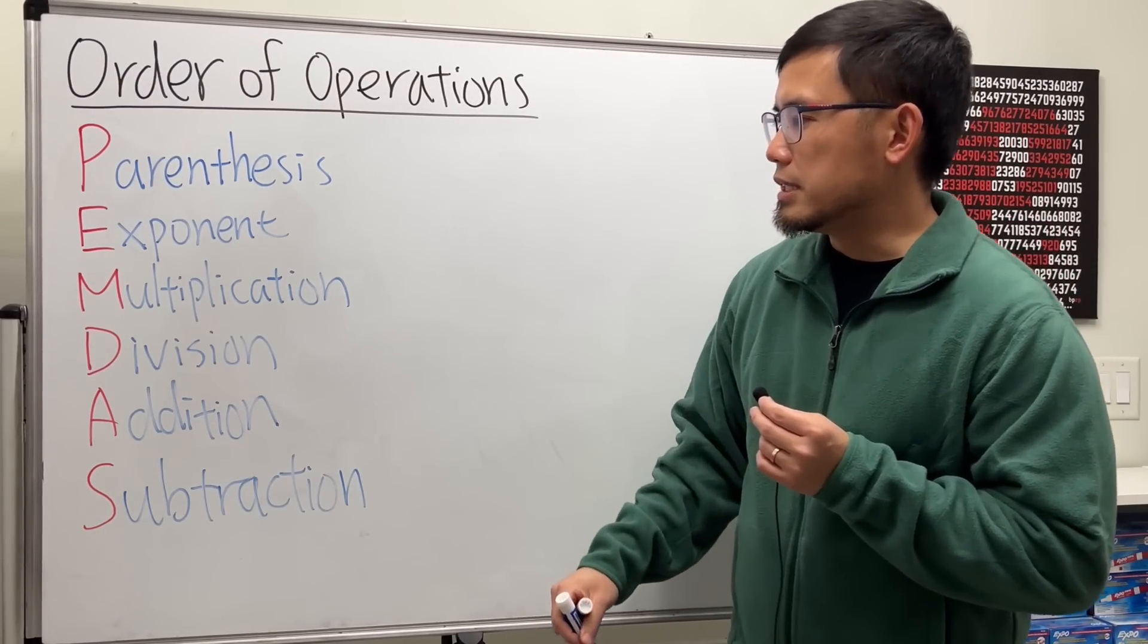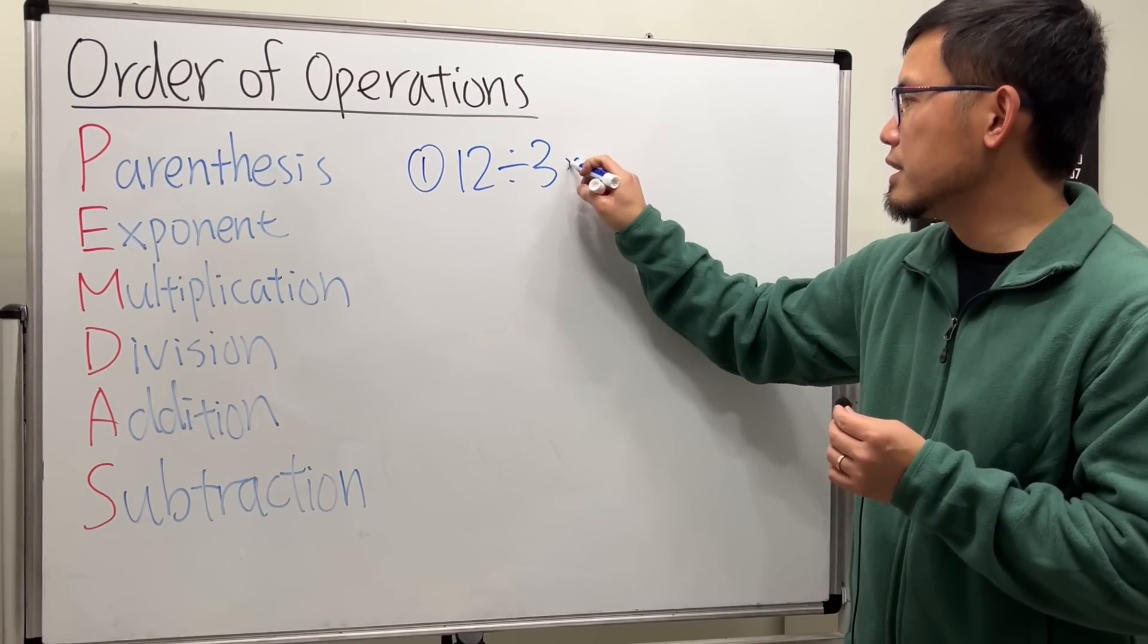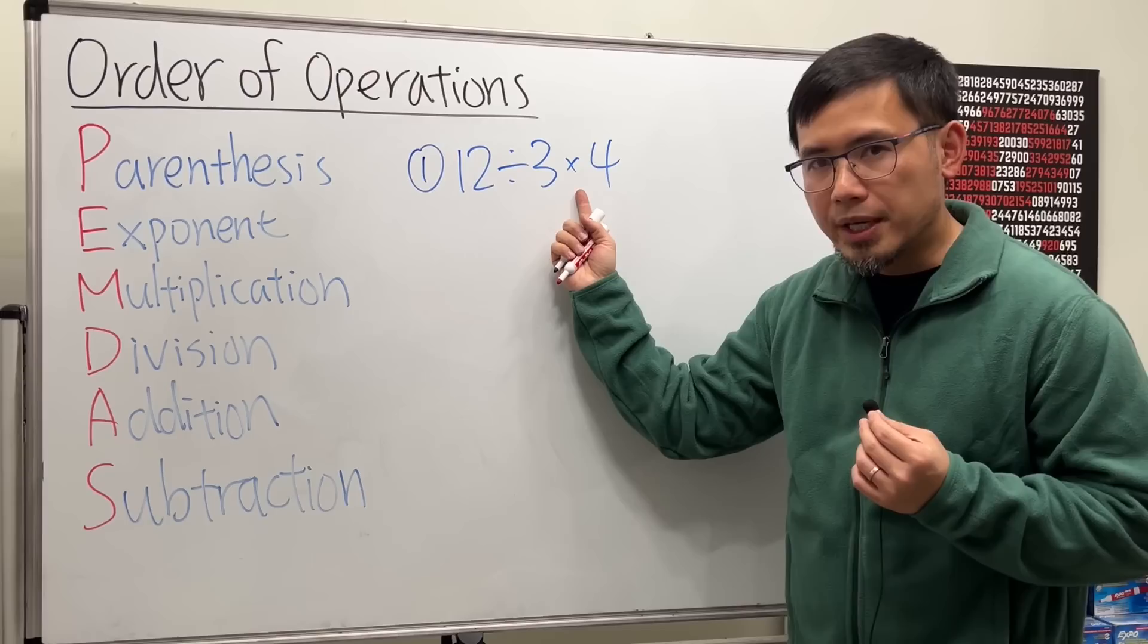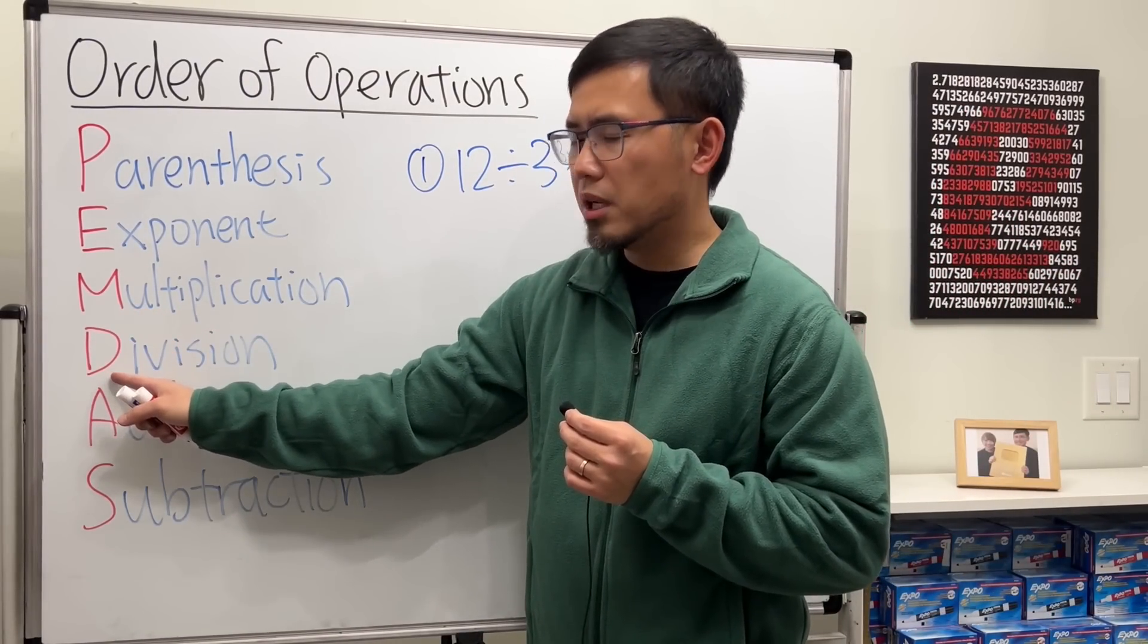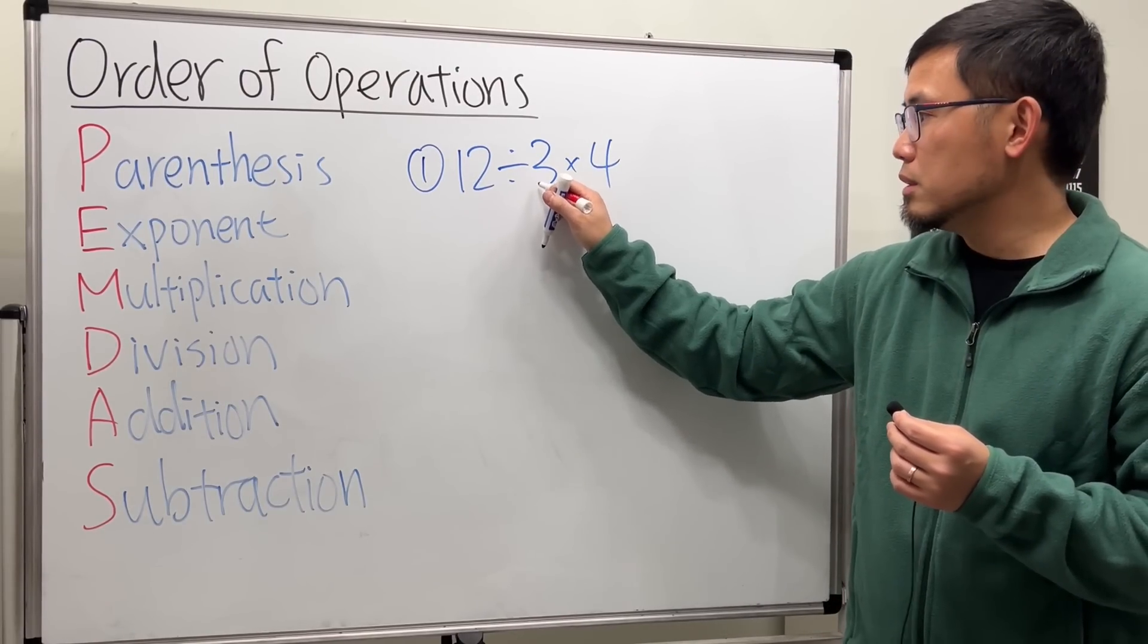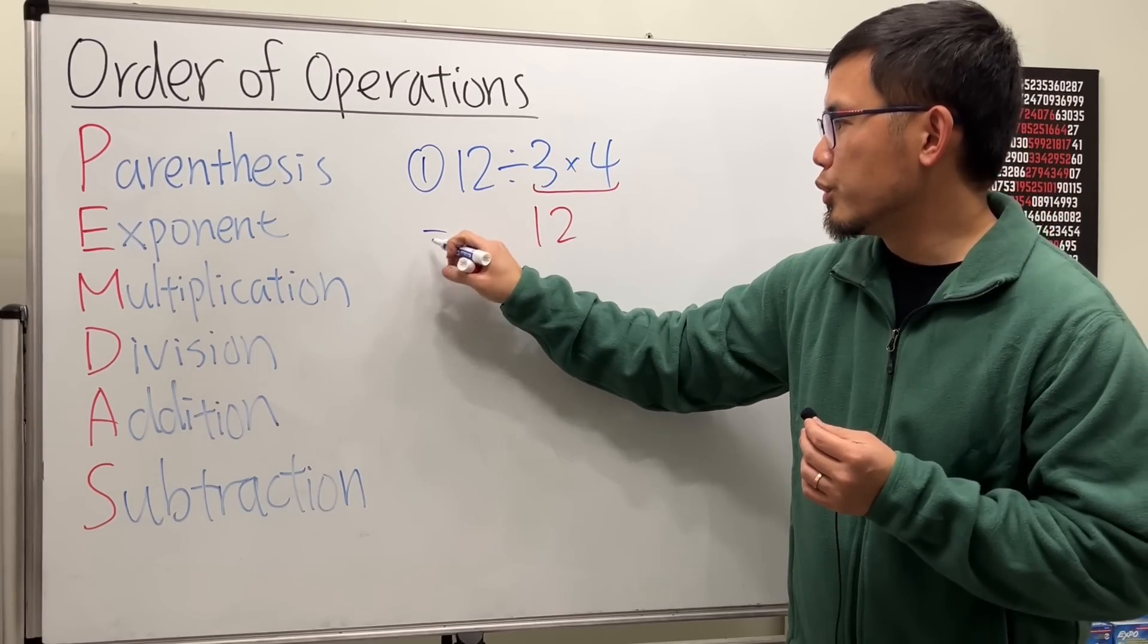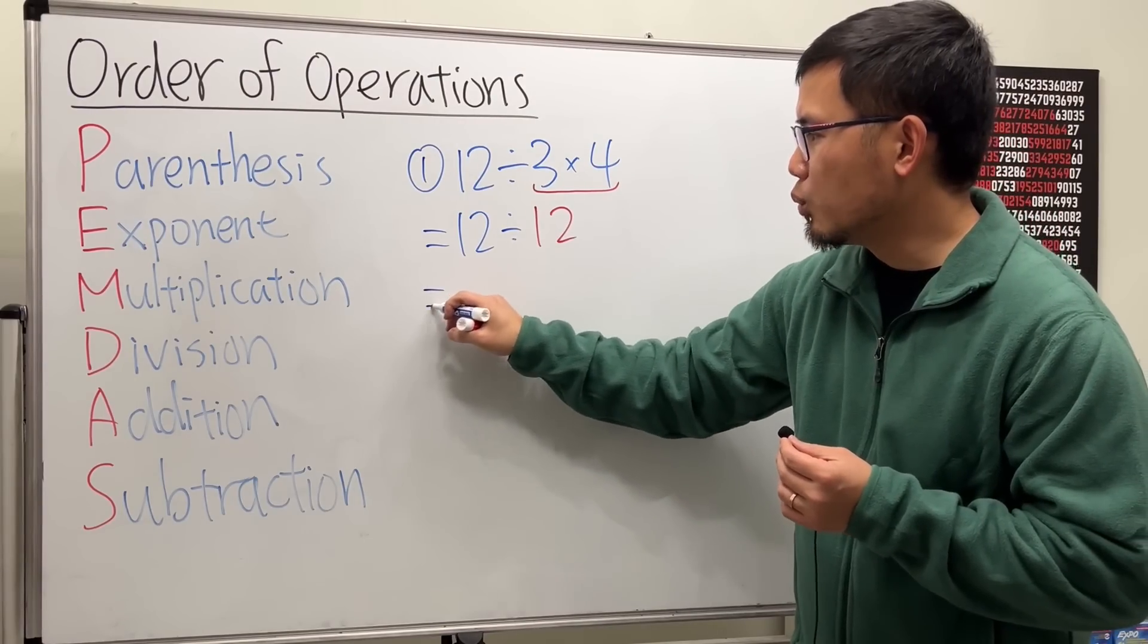First problem with this is, let's take a look at this question: 12 divided by 3 times 4. Here we have division, and then we have multiplication. But on PEMDAS, multiplication is above division. So should we multiply first? If we do that, 3 times 4 is 12, then bring down the 12 in front and divide. 12 divided by 12, we get 1.